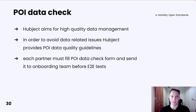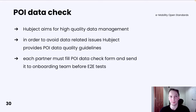Speaking of data, Hubject aims for high-quality data management to enable all partners further scaling. In order to avoid data-related issues, Hubject provides point-of-interest data quality guidelines. Each guideline is a list of property names together with type, description, example, and information whether the data is mandatory or not. Each partner is obliged to fill in a point-of-interest data check form and mark if they are able to meet the requirements for a specific property. The filled-in form should be sent to your support onboarding team before end-to-end tests.